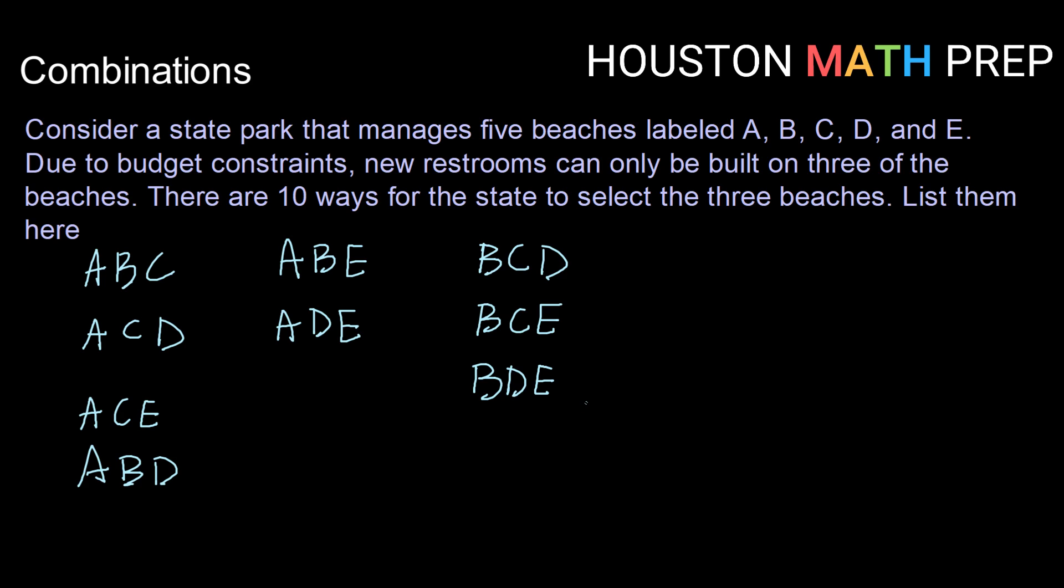So that's all the ways that B can be in there without A. Now that's nine out of our ten. The only arrangement we haven't listed is C, D, and E.